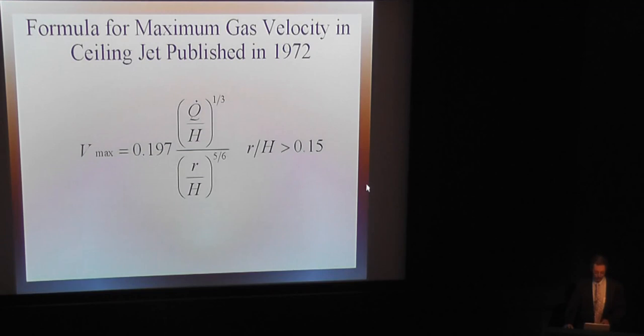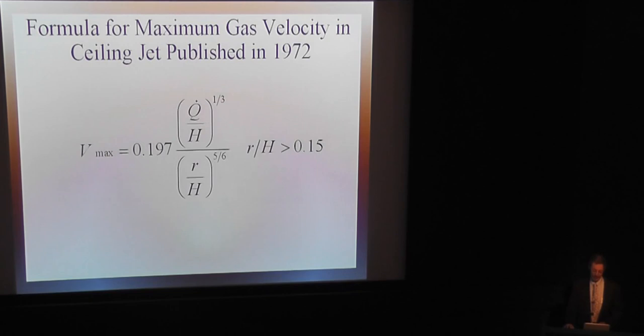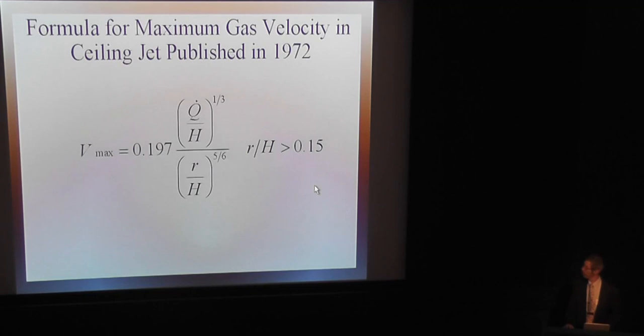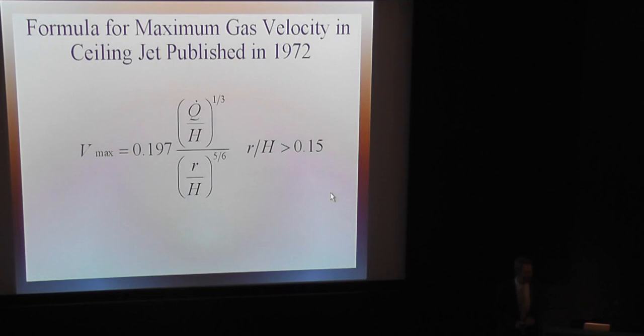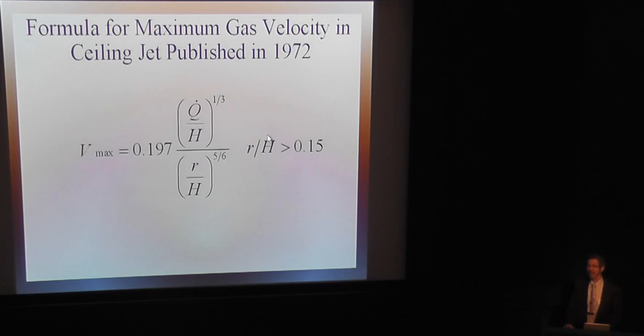These are the formulas that were originally published, in SI units — kilowatts and meters. This is the formula for the maximum ceiling jet velocity, the radial outward velocity on the ceiling. The formula is valid from where the turning region ends, at radius over ceiling height greater than 0.15. Q-dot here is the actual heat release rate of the fire, though at that time we didn't know exactly what the heat release rate was — we were guessing from mass loss data. We now know that velocity is controlled by the convective component of the heat release rate.